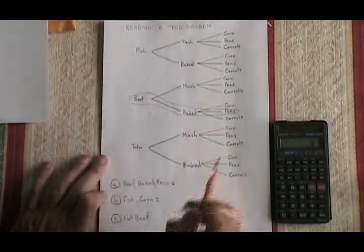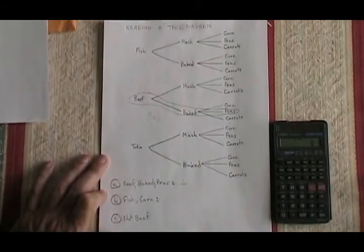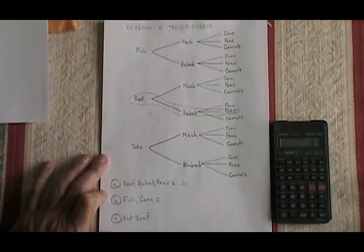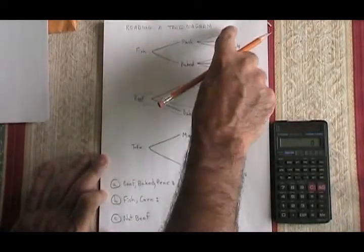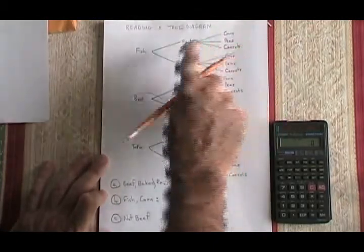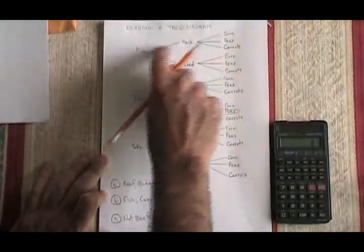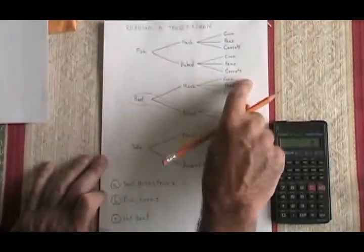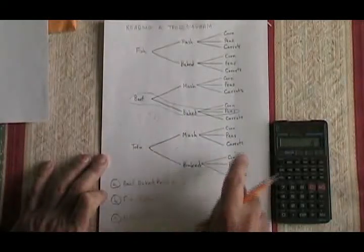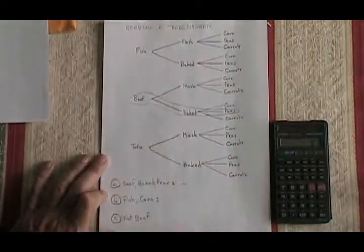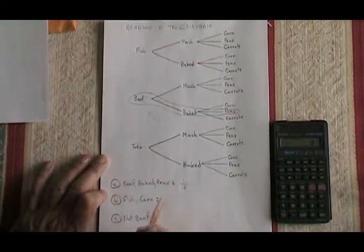That's the only combination that has those three foods put together. How many combinations are there all together? Well, fish and mashed potatoes gives three choices of vegetables. Fish and baked potatoes also gives three choices. We can see that there are actually six different choices that involve fish. There are six that involve beef and there are six that involve tofu. So the total is 18 different combinations that can be made. So one out of 18 of the combinations has these three foods in it.